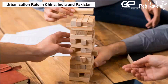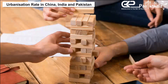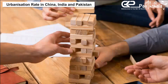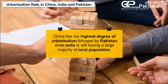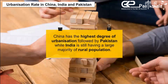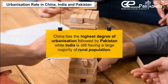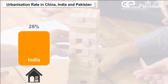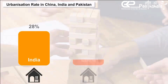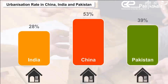Urbanization rate in China, India, and Pakistan. China has the highest degree of urbanization, followed by Pakistan, while India still has a large majority of rural population. India has 28% of its population living in urban areas, whereas China and Pakistan have 53% and 39% respectively.